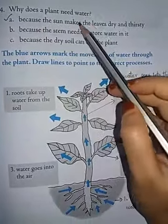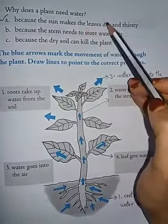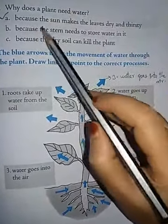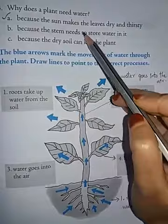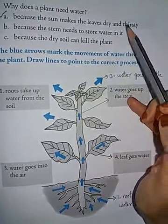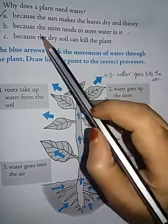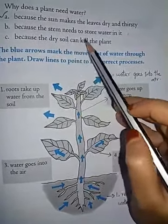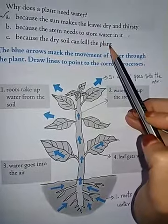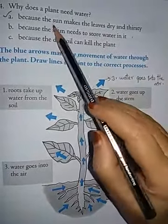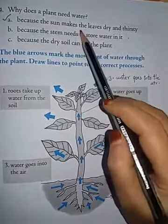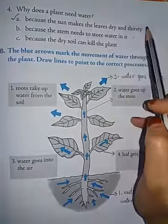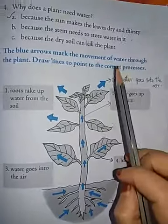Because the sun makes the leaves dry and thirsty, because the stem needs to store water, or because the dry soil can kill the plant? Option A is correct: because the sun makes the leaves dry and thirsty. Very good!